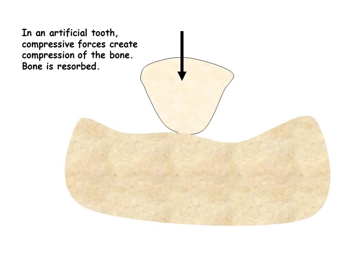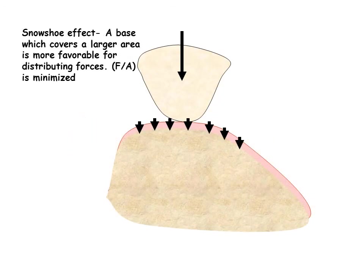Edentulous areas are subjected to compression, causing resorption. Forces of compression are spread throughout the supporting structures by using a broad denture base to prevent overstressing one small area. Stress equals force per unit area. This is referred to as the snowshoe effect.